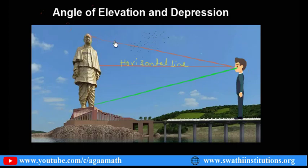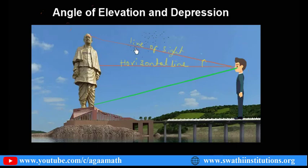This line is the horizontal line. When I make my eyesight to the top of the statue, the angle from the horizontal line changes to a new line, which is called the line of sight. The angle between the horizontal line and the line of sight is said to be the angle of elevation.